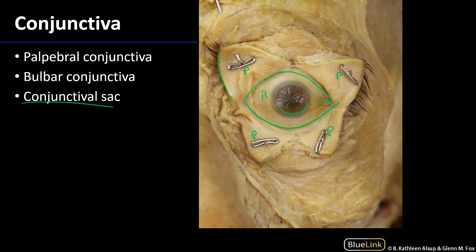The conjunctival sac is where tears, or lacrimal fluid, are secreted. This lacrimal fluid moves from the superior lateral portion of the eye — where the lacrimal gland lives — across toward the medial canthus, or angle of the eye, where we have the lacrimal lake. It is absorbed at the lacrimal lake into the remainder of the lacrimal system, which will be discussed in a subsequent video.